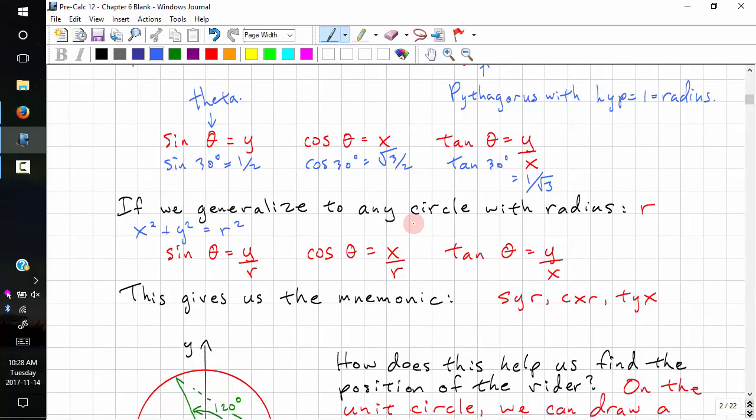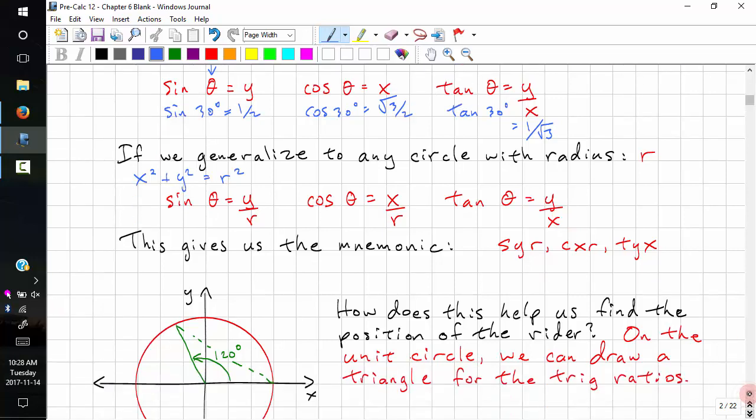If we generalize to any circle with radius r, we have sine theta equals y over r, cos theta equals x over r, and tan theta equals y over x.